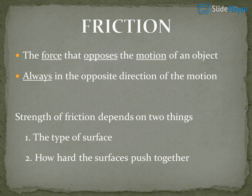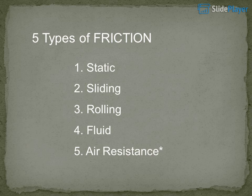Friction is the force that opposes the motion of an object, always acting in the opposite direction of motion. The strength of friction depends on two things: 1. The type of surface, and 2. How hard the surfaces are pushed together. There are 5 types of friction: static, sliding, rolling, fluid, and air resistance.